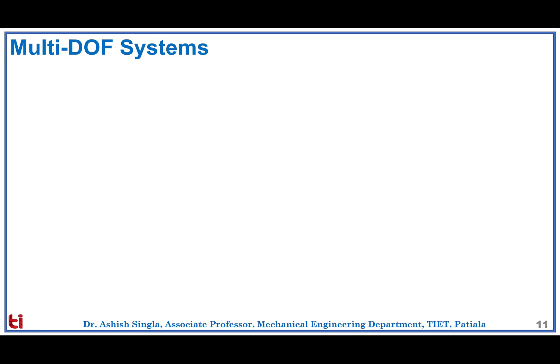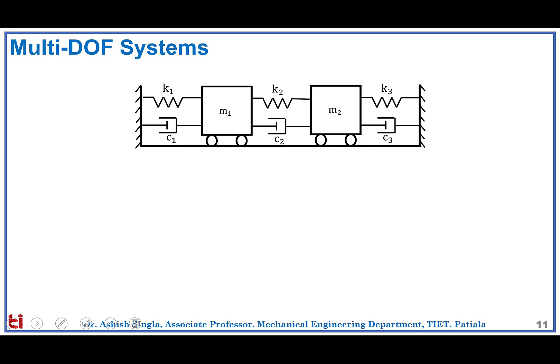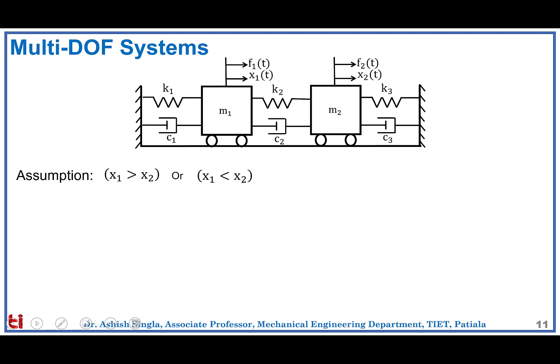Now comes the multi-degree of freedom systems. Consider a two-degree of freedom system with two masses m1 and m2 connected by three springs of stiffness k1, k2, k3 and three dampers with damping coefficients c1, c2, c3. Both bodies are under external forces f1 and f2 and are displaced by x1 and x2 from their respective static equilibrium positions. To draw the free body diagram correctly, we must assume whether x1 is greater than x2 or less than x2.